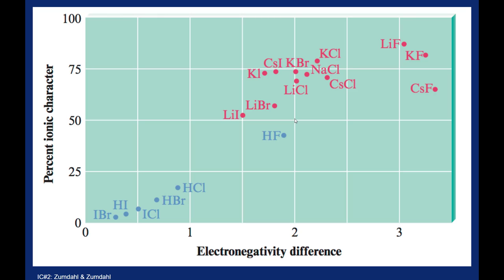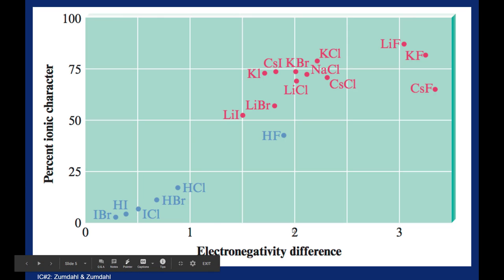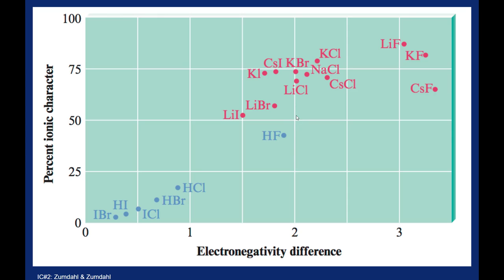These are just different ways to define what an ionic versus a covalent bond is. The electronegativity values are a good guideline, but they're not the only story. I still fall under the camp that when I see a metal and a non-metal together, I'm pretty comfortable calling those bonds ionic.